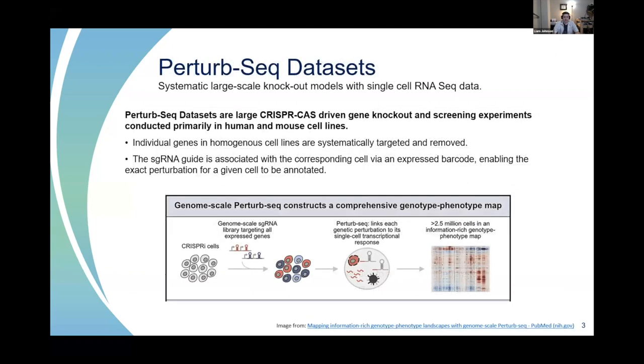These datasets first started showing up in 2016 and are large CRISPR-Cas9 driven knockout models followed by screening experiments to provide RNA-seq data, primarily in human and mouse cell lines. The basic process is to target and systematically knock out individual genes in these homogenous cell lines and then attach an associated sgRNA guide barcode and annotate each cell.